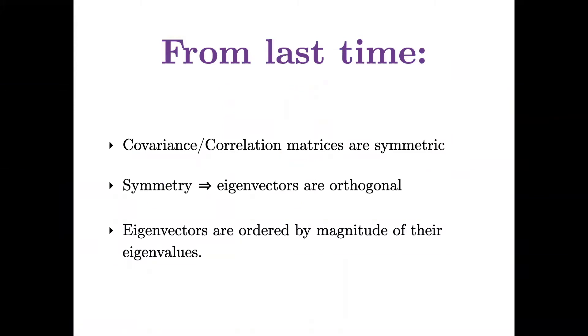We learned that covariance and correlation matrices are symmetric, that symmetry implies that their eigenvectors are orthogonal, and we also remember that eigenvectors for any matrix will always be ordered by the magnitude of their eigenvalues, the largest eigenvalues corresponding to the first eigenvectors.